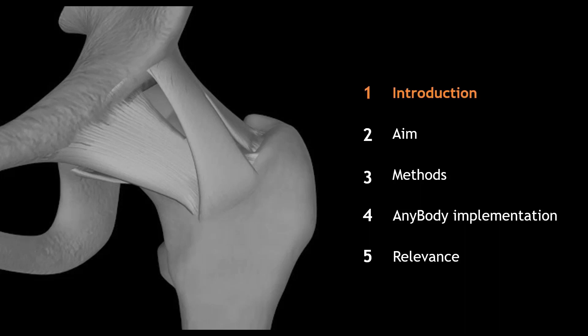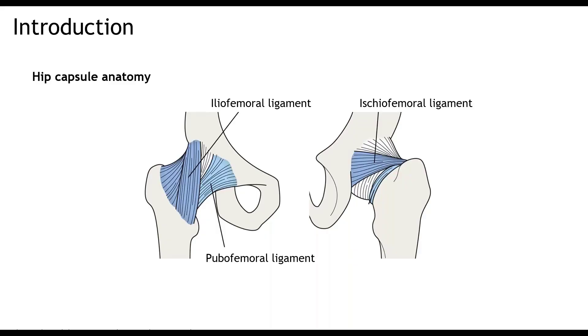But first things first, let me start with a bit of anatomy. The hip capsule is reinforced with three main ligaments. The pubofemoral ligament at the inferior side of the hip joint. The ischiofemoral ligament is located at the posterior side. And lastly, the iliofemoral ligament covers the superior and anterior side of the hip capsule.